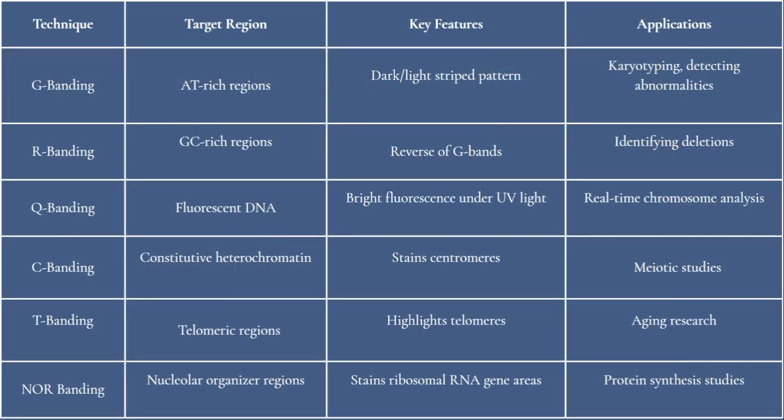In summary, G-banding targets adenine and thymine-rich regions, producing dark and light bands, and is widely used for karyotyping and detecting chromosomal abnormalities. R-banding targets guanine and cytosine-rich regions, creating a pattern opposite to G-banding, and is useful for identifying deletions near chromosome ends. Q-banding focuses on adenine and thymine-rich regions using quinacrine dihydrochloride to produce fluorescent bands under UV light, which helps in real-time chromosome analysis.